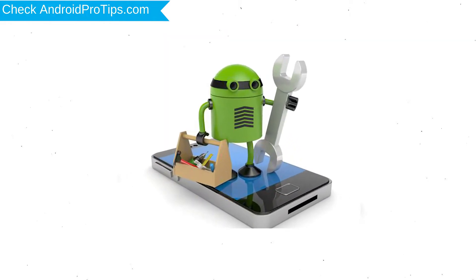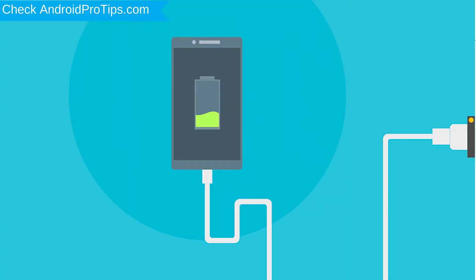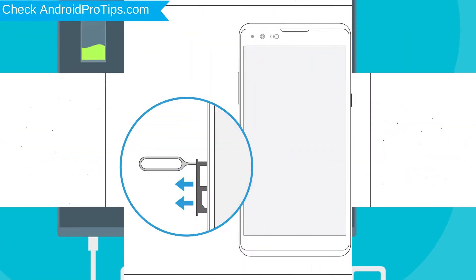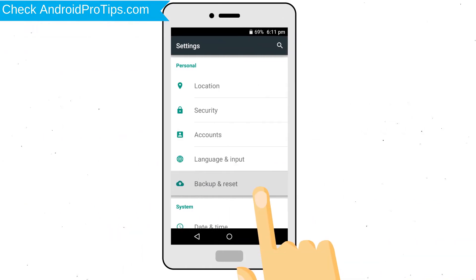Before resetting your mobile, make sure your battery is above 50%, remove SD cards and SIMs, and back up your Android mobile data if possible.